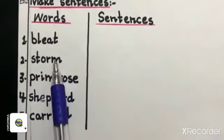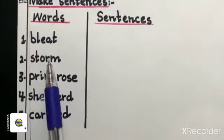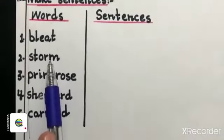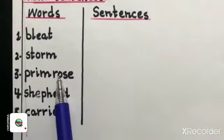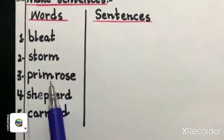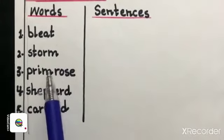Then your next word is STORM. You have to make sentence of STORM. STORM is an unpleasant weather with strong wind. PRIMROSE. PRIMROSE is a plant with red and yellow flowers. You have to make sentence of primrose.